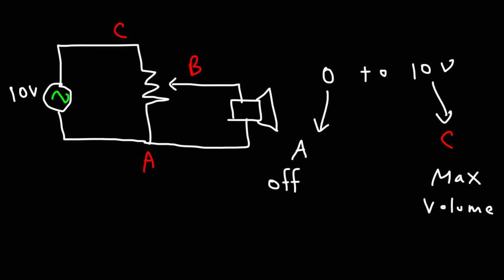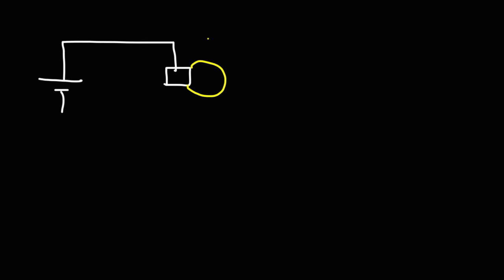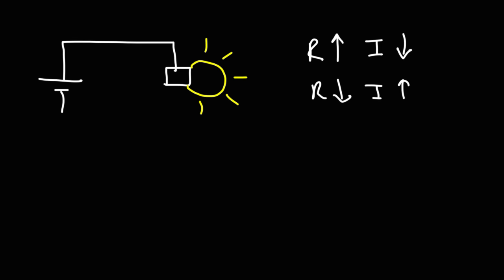Sometimes we may not want to decrease the voltage — instead, we may want to limit the amount of current flowing in an element. In this case, we could use a potentiometer for brightness control. The brightness of a light bulb is directly proportional to the current flowing through it. By increasing the resistance, we can decrease the current flowing through a light bulb, thus decreasing the brightness. If we decrease the resistance, we'll increase the current and thus increase the brightness. This circuit is different from the previous two because we don't need to use all three points of the potentiometer — we can just use two out of the three terminals.